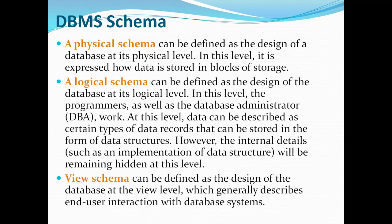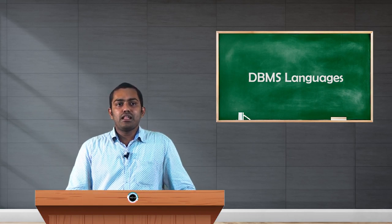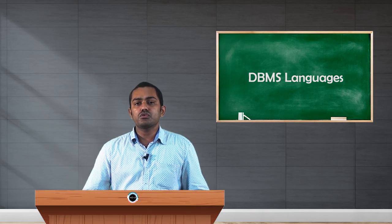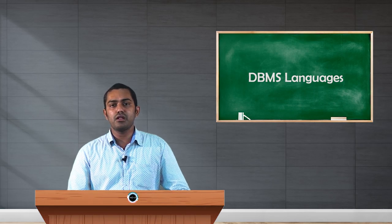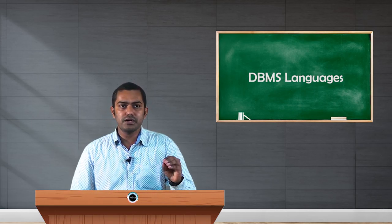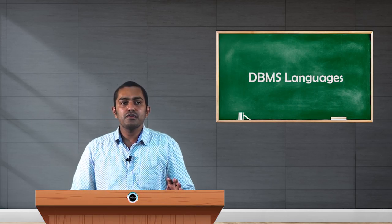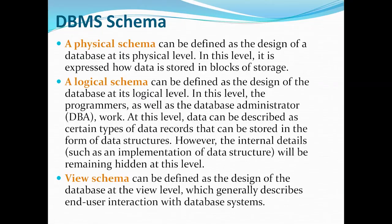First, physical schema can be defined as the design of a database at the physical level. At the physical level, we define what amount of memory we have to allocate for a particular table or column. With the help of physical schema, we get the entire details about the database — memory size, what the size of each element — all those details come from the physical schema.